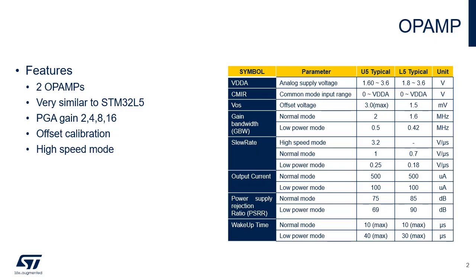The STM32U5 integrates two op-amp modules which are very similar to the STM32L5. These are general-purpose analog amplifiers which reduce the need of an external standalone op-amp. As these op-amps can be configured in standalone mode with all terminals available for the user,